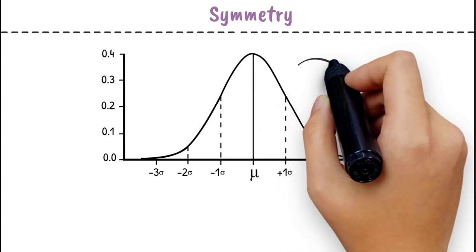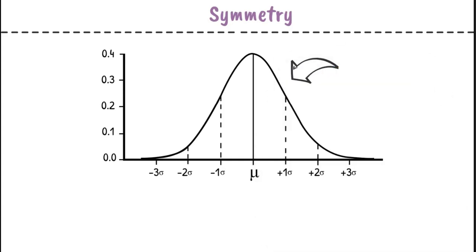First off, let's talk about its symmetry. The curve's total area is equal to 1, or 100%, and its middle point is the mean, or average. 50% of the data falls at or above the mean. 50% of the data falls at or below the mean.